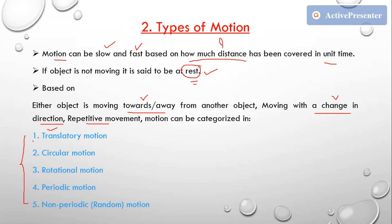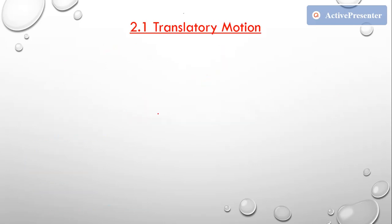There are also oscillatory and vibration motion, but those are not in your syllabus. The five types given in your syllabus are: translatory motion, circular motion, rotational motion, periodic motion, and non-periodic motion. Now let's move on to translatory motion.